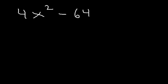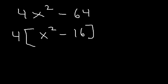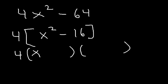Now what about 4x squared minus 64? Even though we can take the square root of 4 and 64, notice there's a GCF — it will be easier to take out the greatest common factor first. The GCF between 4 and 64 is 4. So 4x² divided by 4 is x², and 64 divided by 4 is 16. Now we can use the difference of squares: the square root of x squared is x, the square root of 16 is 4, giving 4 times (x minus 4)(x plus 4).